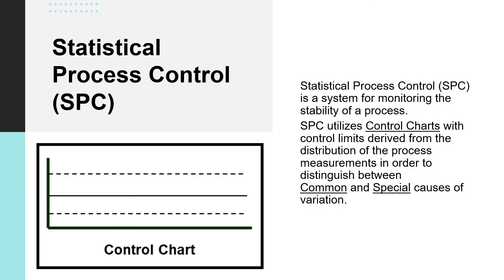It is time for us to look at what statistical process control or SPC is all about. SPC is a system that monitors the stability of the process, which means that it will let us know whether the process is stable or it is under special cause influences.